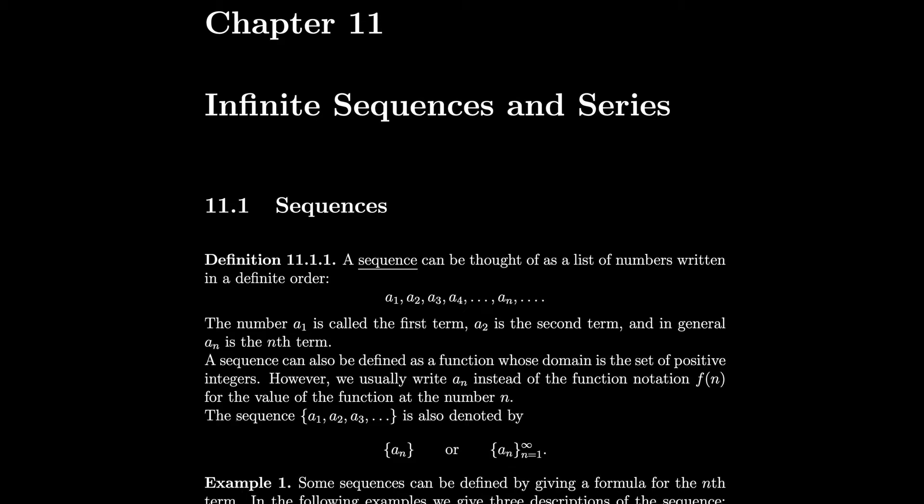A sequence can also be defined as a function whose domain is the set of positive integers. However, we usually write an instead of the function notation f(n). So instead of f(x) where x was any real number, if you think of an as f(n), then each of the inputs is only an integer.